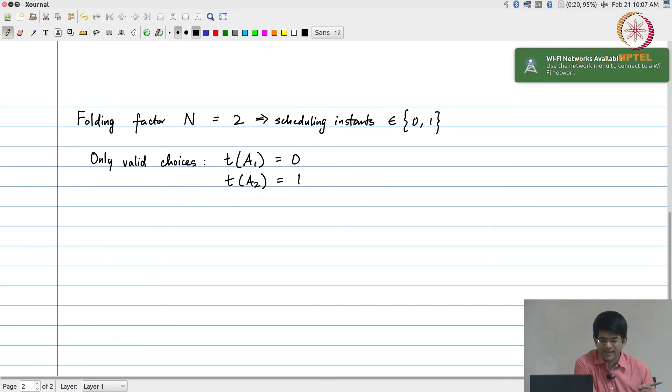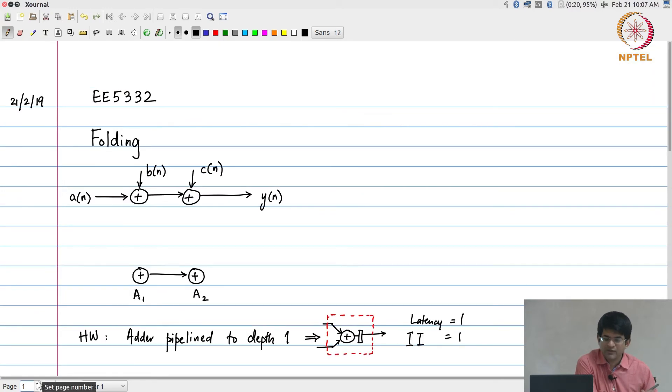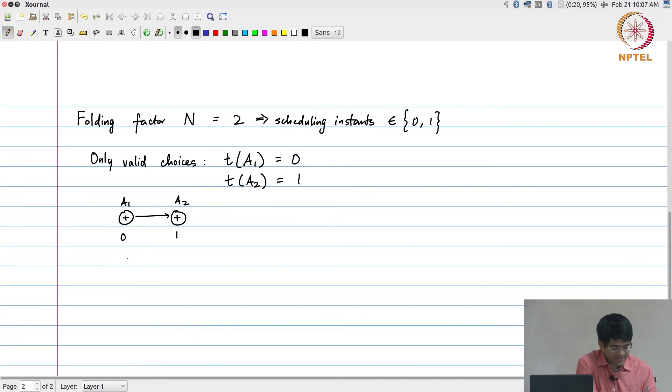Now let us go further with that. How do we translate this into a complete hardware architecture? Once I have these two numbers, let us look at the link from A1 to A2. A1 is scheduled at time 0, A2 is scheduled at time 1. A1 scheduled at time 0 means that the output of A1 will be ready at time 1, because my hardware is such that after I give the inputs, it adds and then puts it into a register and the output is available only on the next clock cycle. For this edge A1 to A2, A1 scheduled at 0, output is ready at 1, and A2 is scheduled at 1.